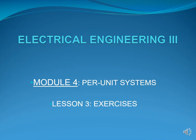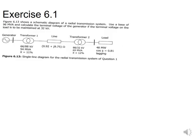Welcome to our third lesson of module 4, where we are dealing with the exercise questions from the back of our PDF for module 4. The first exercise, 6.1, is shown in the circuit in front of you. In the circuit, we have a base of 96 MVA and we are asked to calculate the terminal voltage at our generator. We start by looking at our load so that we can calculate our current.